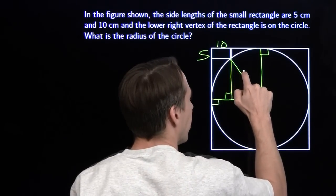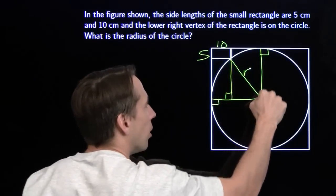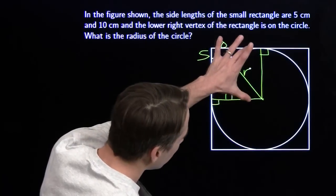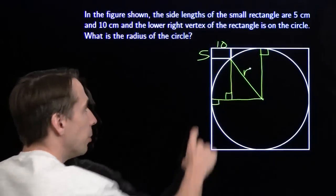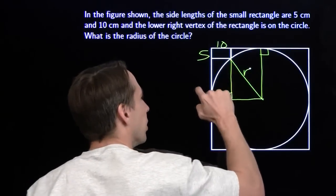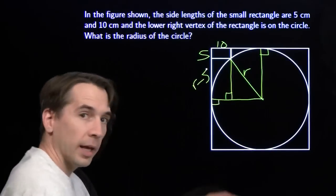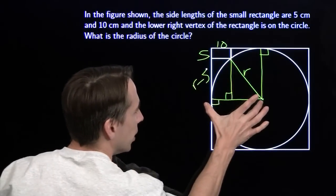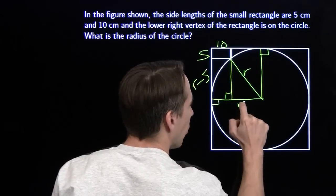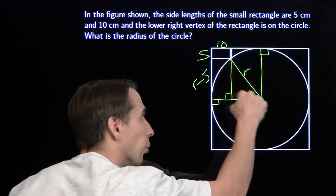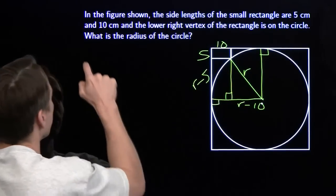Let's see if we can find the side lengths in terms of r. r is the radius — that's what we want. This is r, this is r, this is r. If this length is r as the radius, then this whole big thing here is a rectangle, and that's the radius as well. That means this leg right there is r minus 5. That gives us one leg length. And then we do the same thing over here: this whole thing is r, this length is 10, so this little piece right here is r minus 10. Now we have a right triangle with all three side lengths in terms of r. We can break out the Pythagorean theorem.